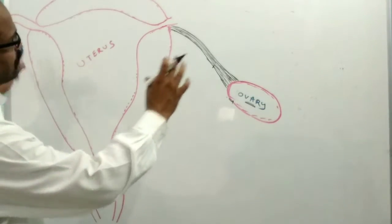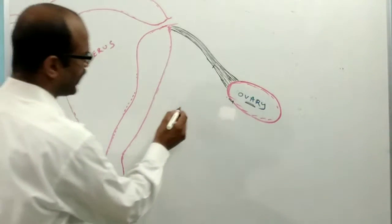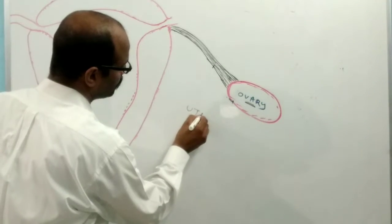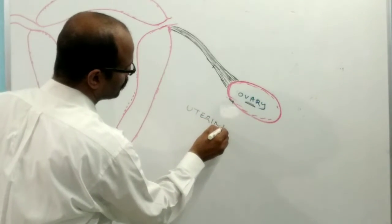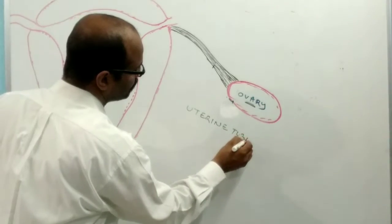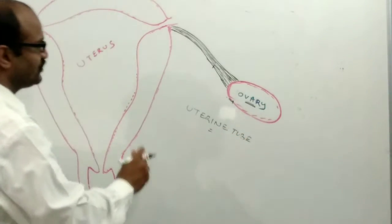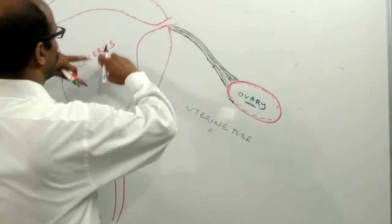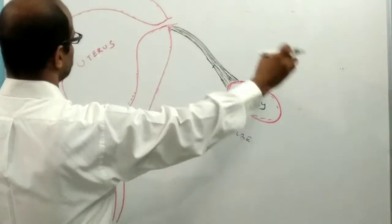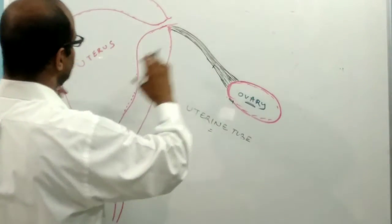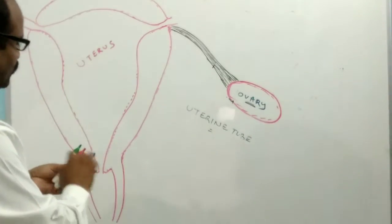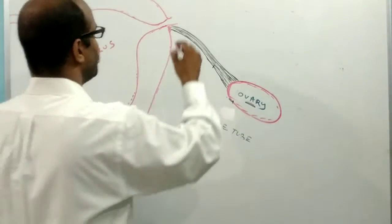This fallopian tube is also known as uterine tube, because the fallopian tube is considered an extension of the uterus. So this is also known as the uterine tube.